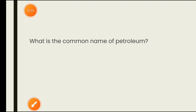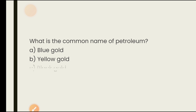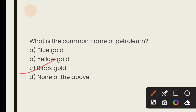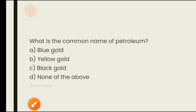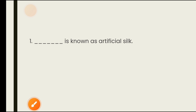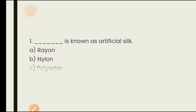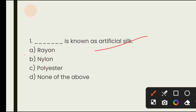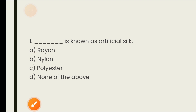What is the common name of petroleum? Options are blue gold, yellow gold, black gold, none of the above. We call petroleum black gold. The answer is black gold. Which is known as artificial silk? Rayon is known as artificial silk. The answer is option A — rayon.